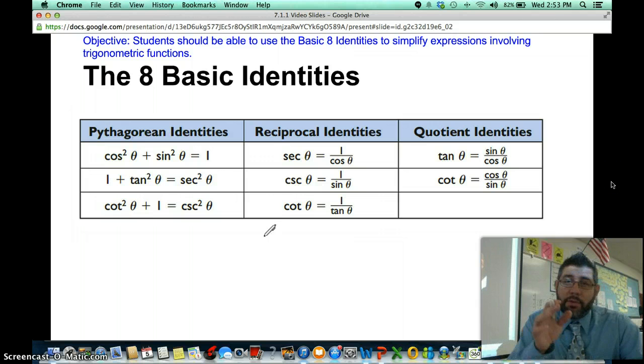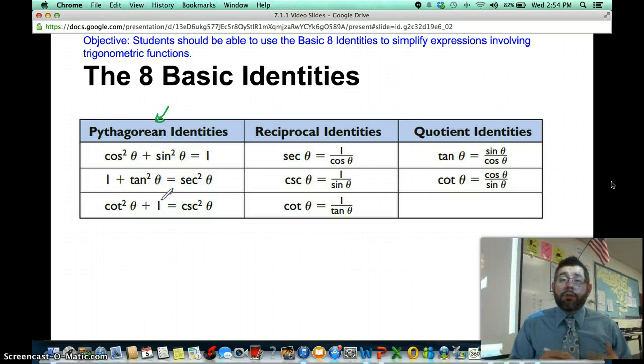You want to be able to identify the names and where they come from. These are the Pythagorean identities. These come up all the time. Cosine squared plus sine squared equals 1. These actually come from the unit circle. We know from previously that the cosine is the x value in the unit circle.